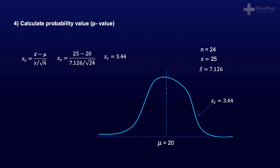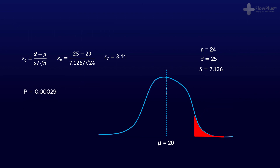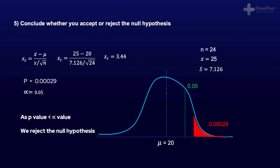Looking at a z-table, which you can find online, we identify that the correlating p-value — which is essentially the area shaded under the curve in red — is 0.00029, which is the same as 0.029%, meaning that assuming the null hypothesis, there is only a 0.029% chance that we would achieve the results we have got. Since the p-value of 0.00029 is lower than the significance level, the alpha value, this means that assuming the null hypothesis, there is very little probability that the same result would be achieved. For this reason, we can reject the null hypothesis and conclude that the blue background does cause the screen time to increase.